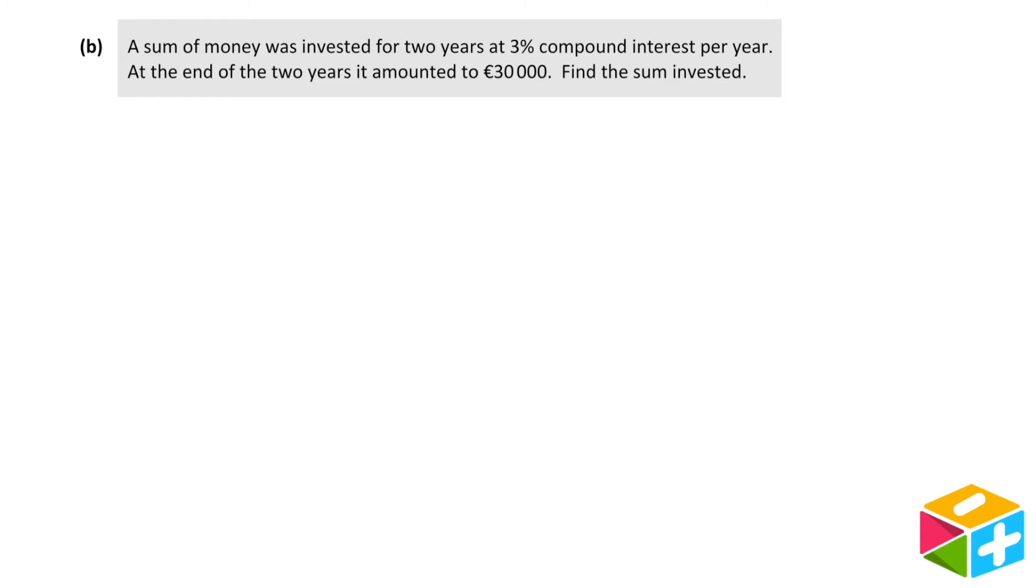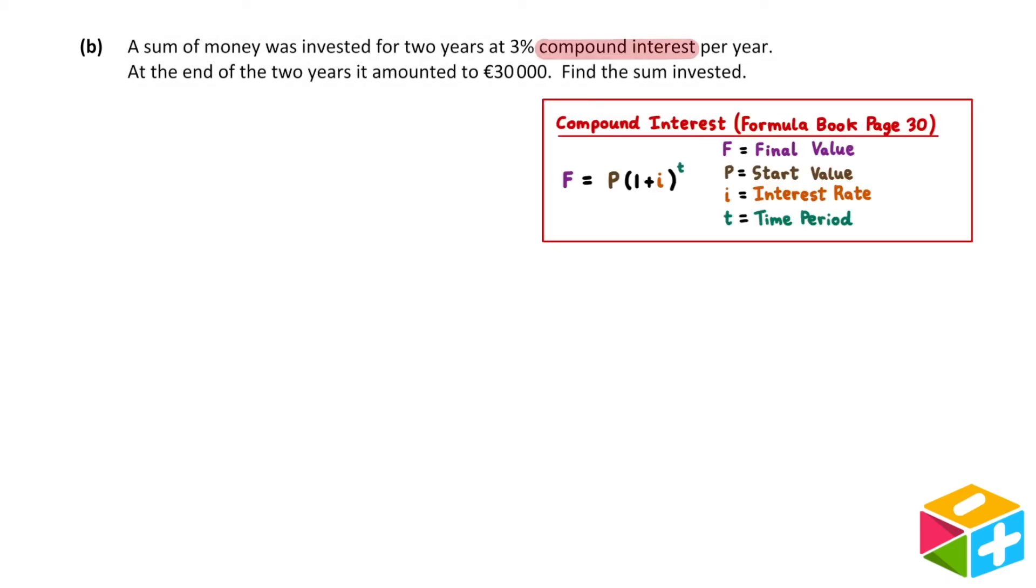A sum of money was invested for two years at 3% compound interest per year. At the end of the two years, it amounted to €30,000. Find the sum invested. Since this question involves compound interest, we'll need to use the compound interest formula on page 30 of our formula book.